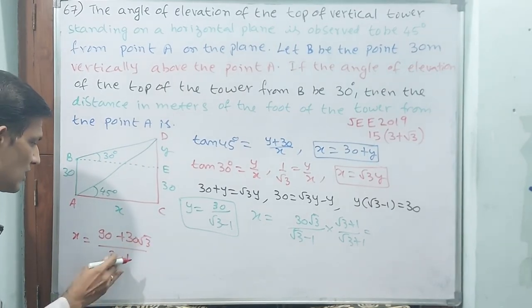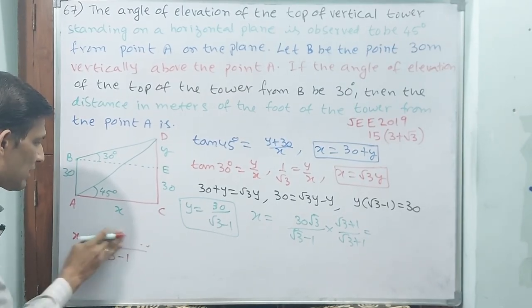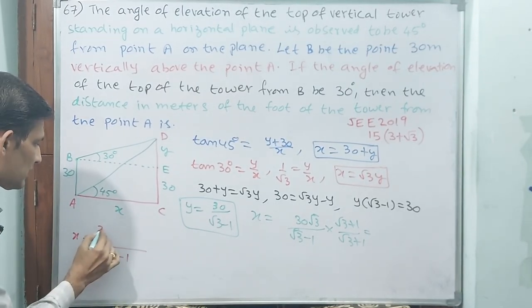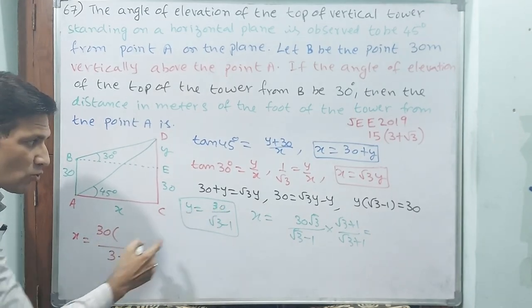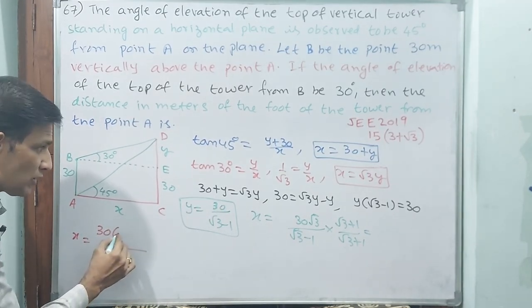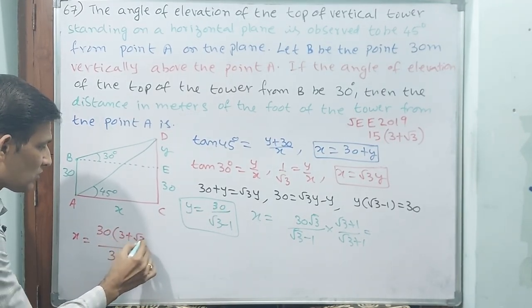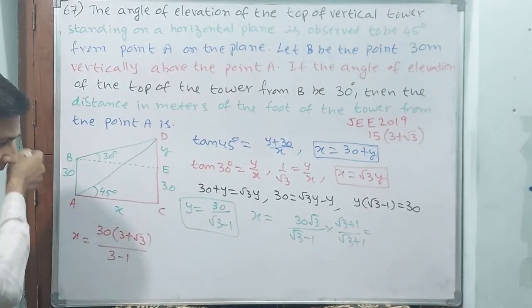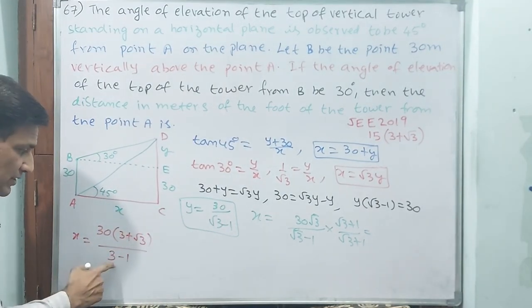I think we do one thing - we don't do this multiplication. See, what I want to say is, keep 30 outside. I am sending only √3 inside. √3 times √3 is 3, plus √3.